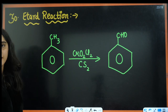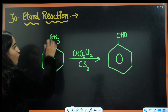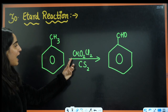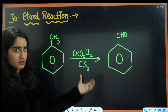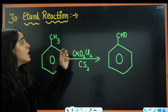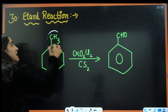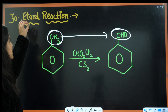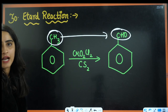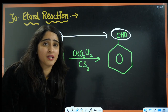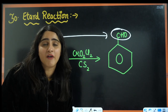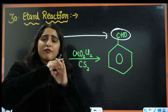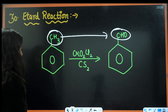Next is Etard's reaction. You have toluene (CH₃ group on benzene) reacted with CrO₂Cl₂ in CH₂Cl₂, and you get the conversion of CH₃ into CHO — i.e., benzaldehyde. This is a direct and scoring question; you can check your PYQs for this.